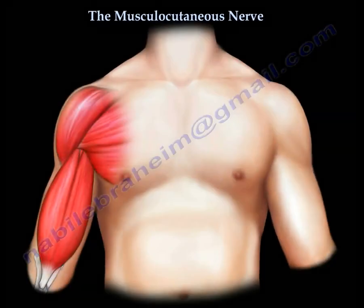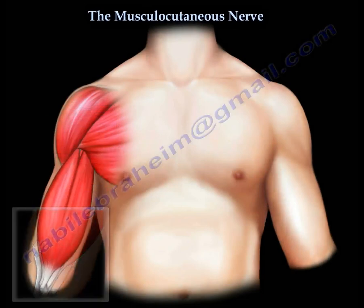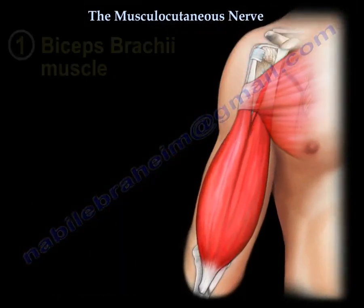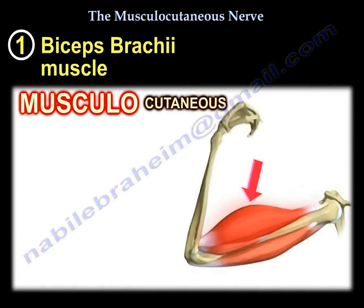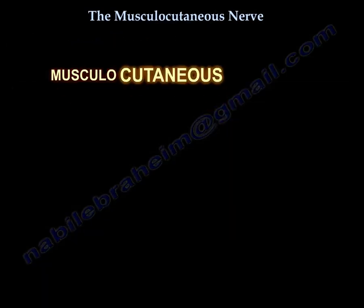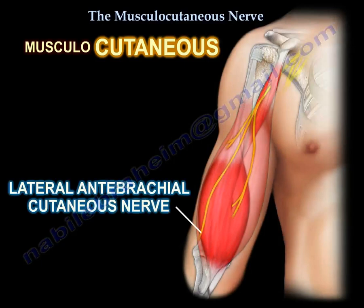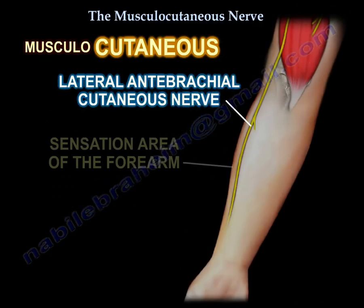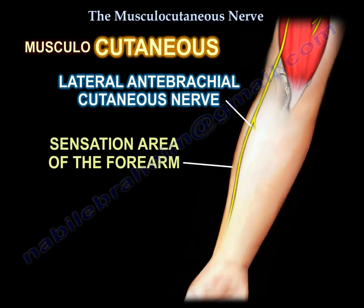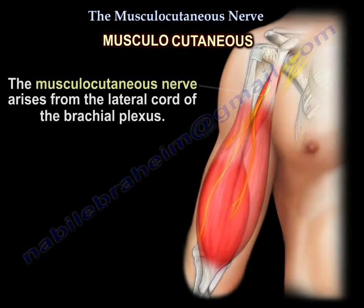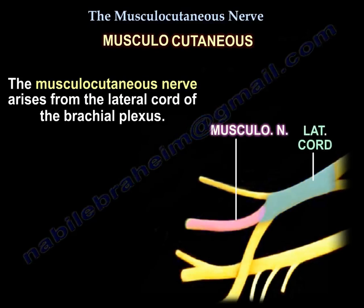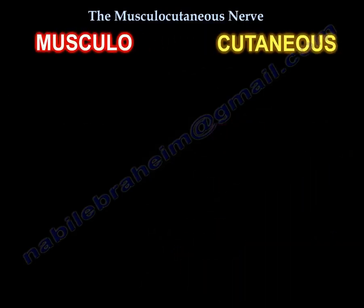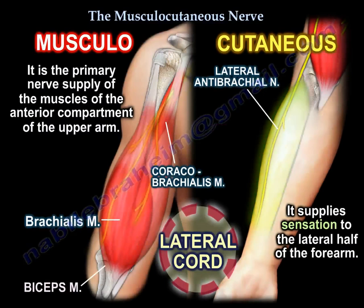The musculocutaneous nerve supplies muscle and has a cutaneous branch. The muscle it supplies is the biceps. The cutaneous branch supplies skin sensation to the lateral half of the forearm. It arises from the lateral cord, which helps remember that it supplies the lateral half of the forearm for sensation. It also supplies the muscles of the anterior compartment of the arm.